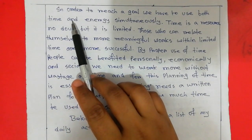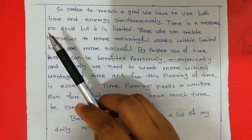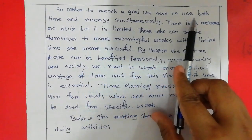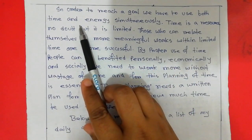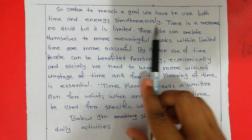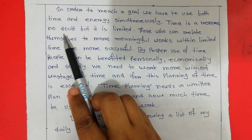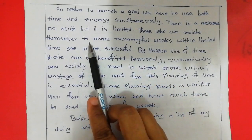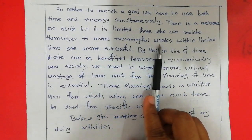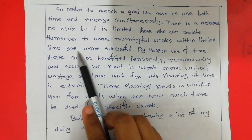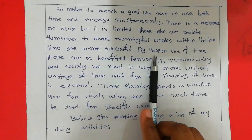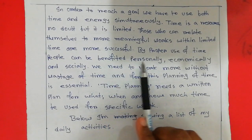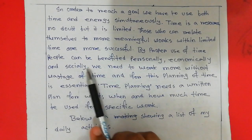The answer begins with a description. In order to reach a goal, we have to use both time and energy simultaneously. Time is a resource, no doubt, but it is limited. Those who can relate themselves to more meaningful works within limited time are more successful.